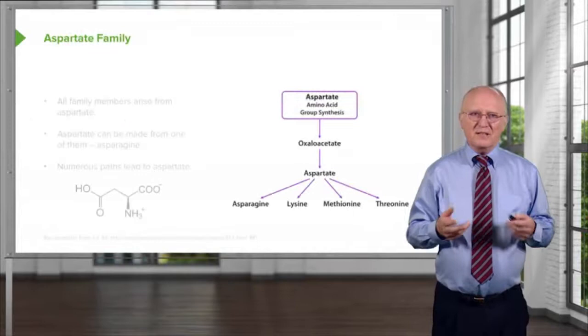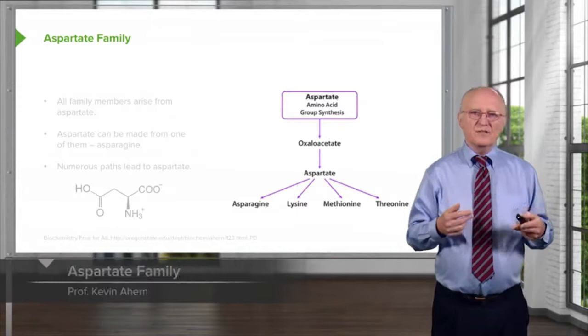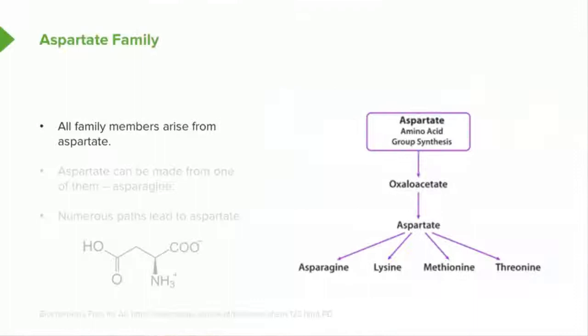The next family we consider in our reactions is that of the aspartate family. The aspartate family, as its name suggests, all involve aspartate. Aspartate can actually trace its roots back one further molecule, and that's oxaloacetate, as you can see here. All family members in this metabolic pathway come from aspartate. Aspartate can actually also be made from one of them, so there's a reverse reaction that can produce aspartate, as we will see.